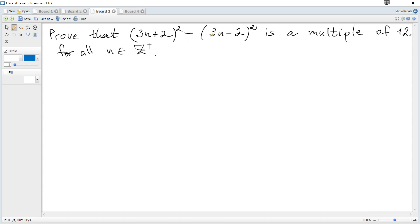Proof that (3n+2)² - (3n-2)² is a multiple of 12 for all n is a positive integer. Let's expand and simplify the given expression.